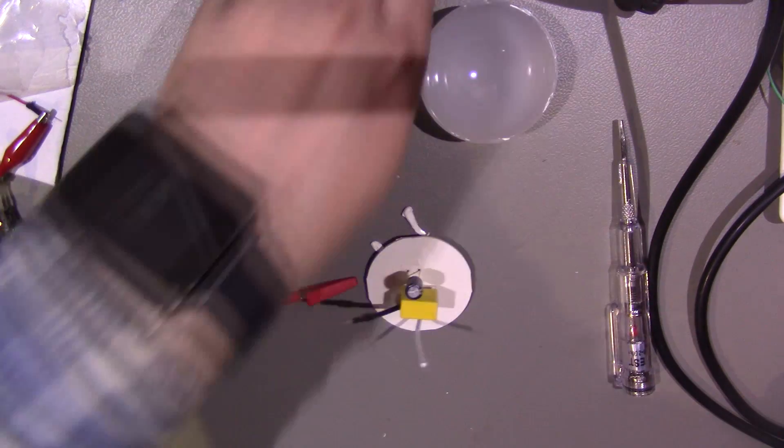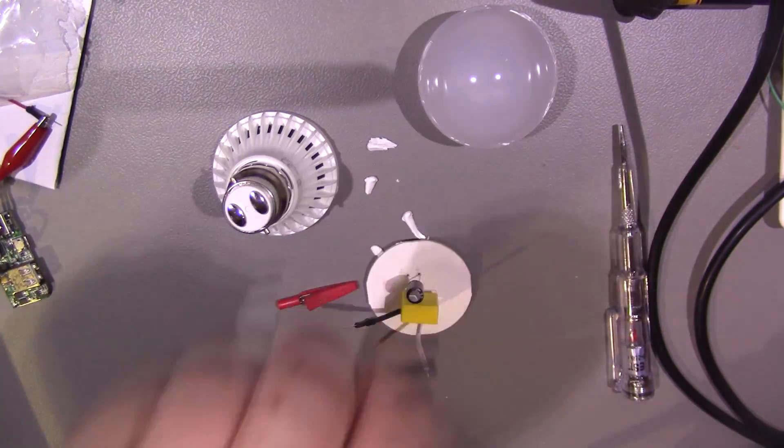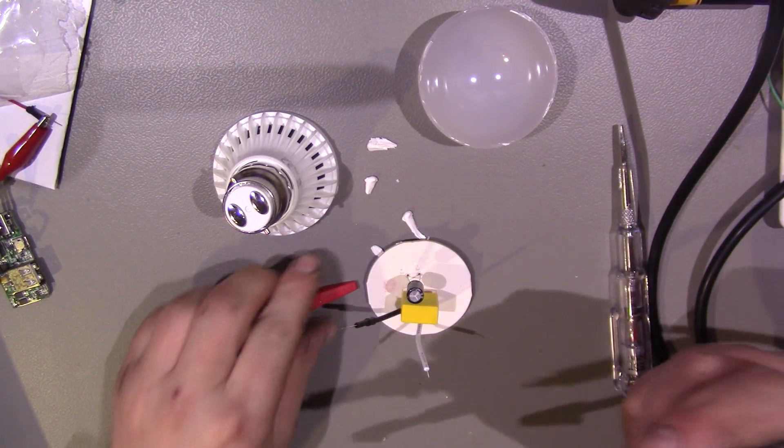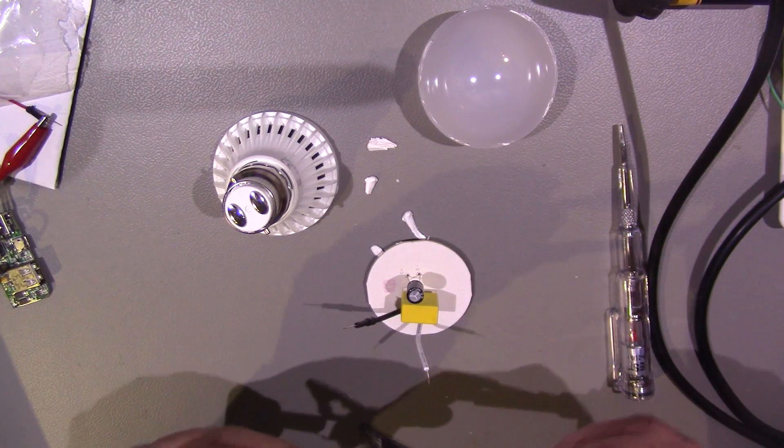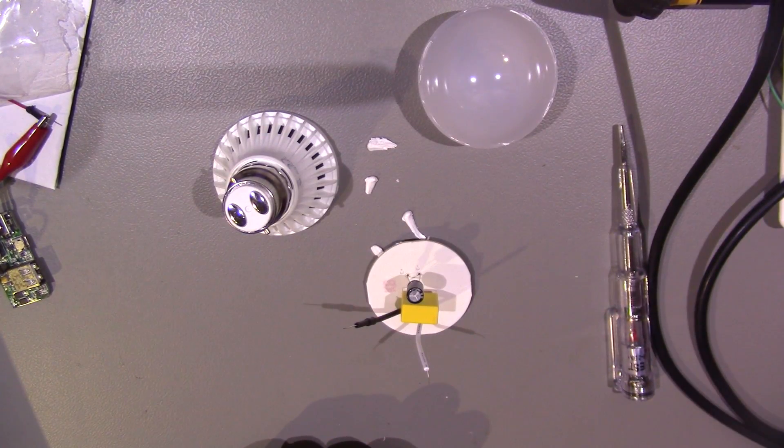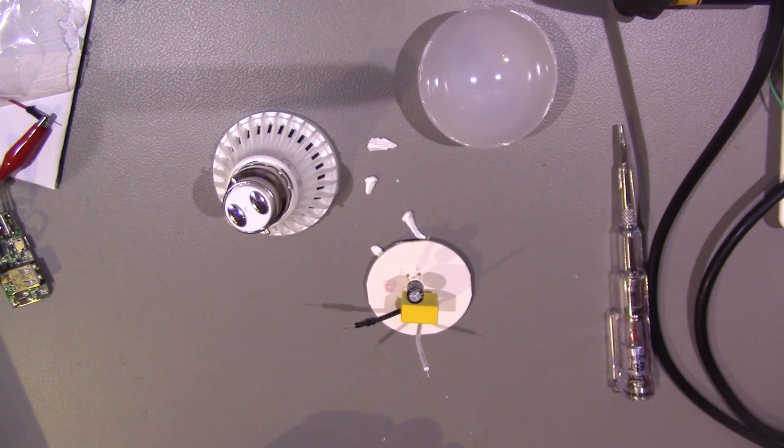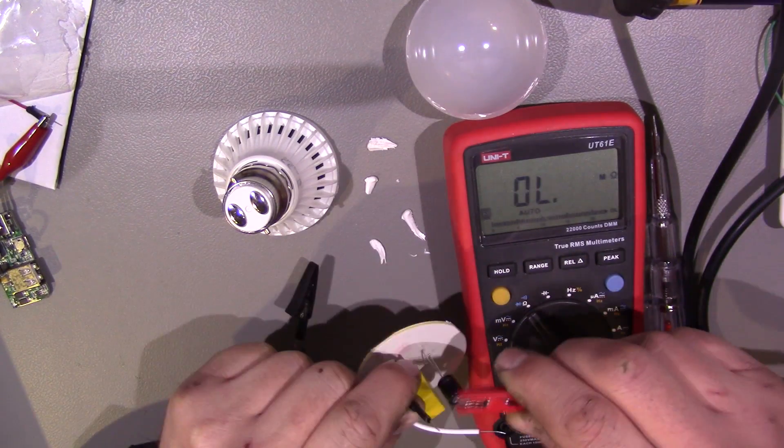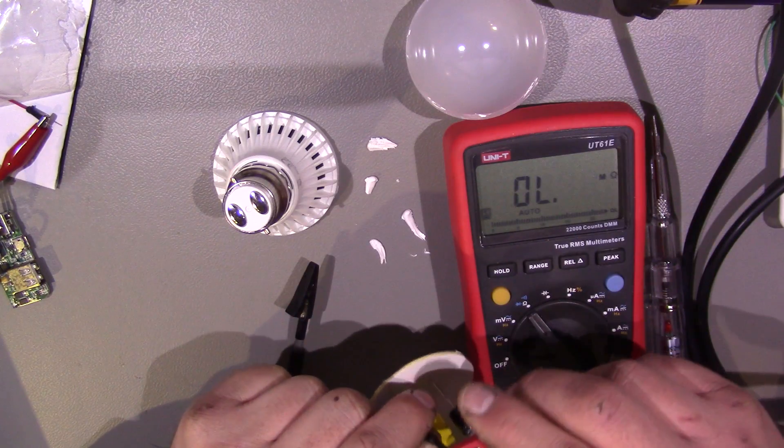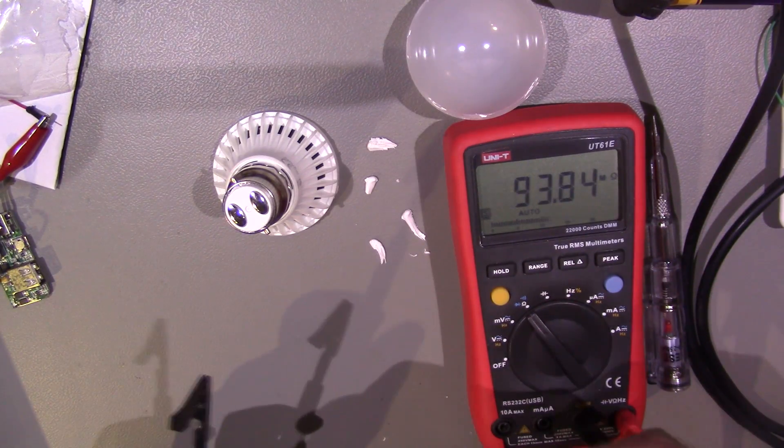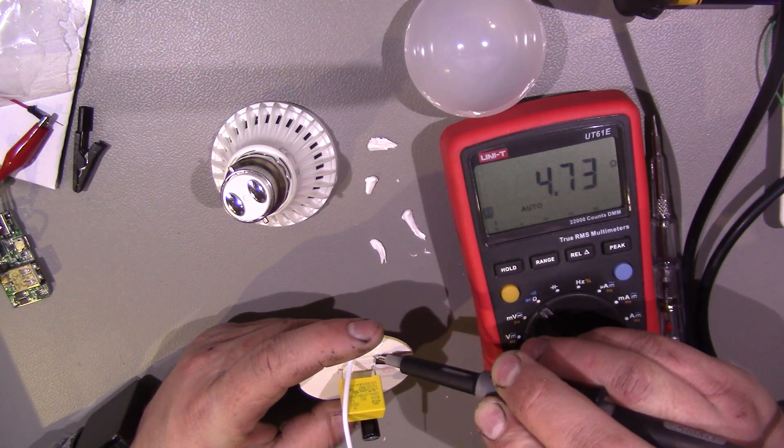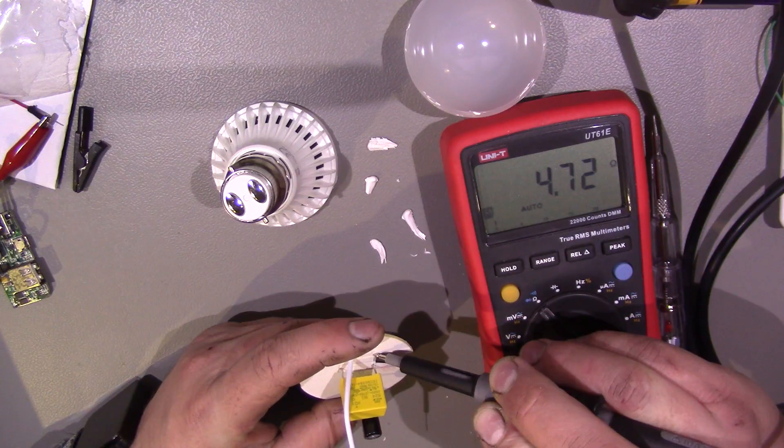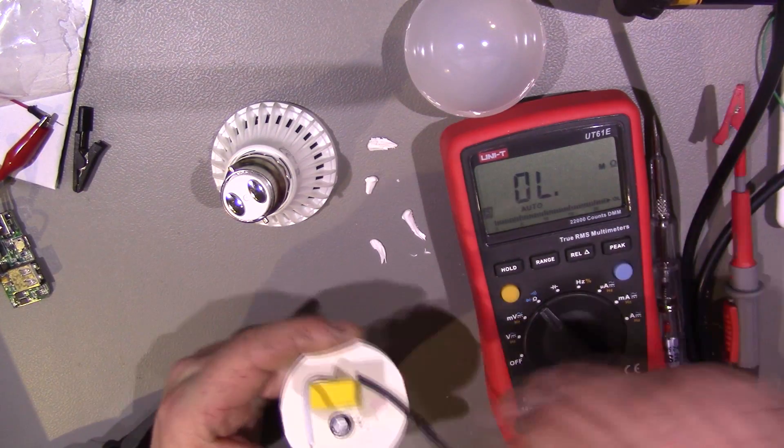I did get some little crocodile clips that fit on the meter probes, so quite useful for these sort of things. So we want ohms, shove the meter there. Let's have a look and see what we're getting on this. There we are. 4.72 ohms. So yeah just a resistor in line there.